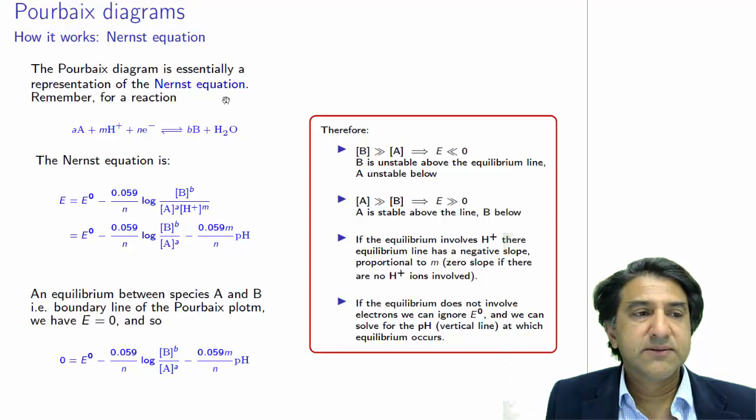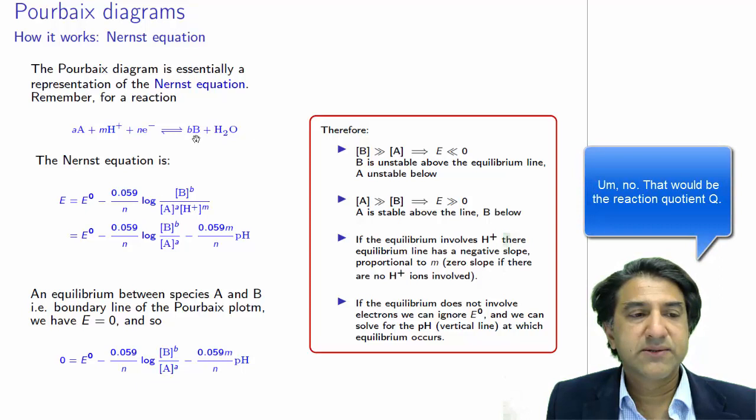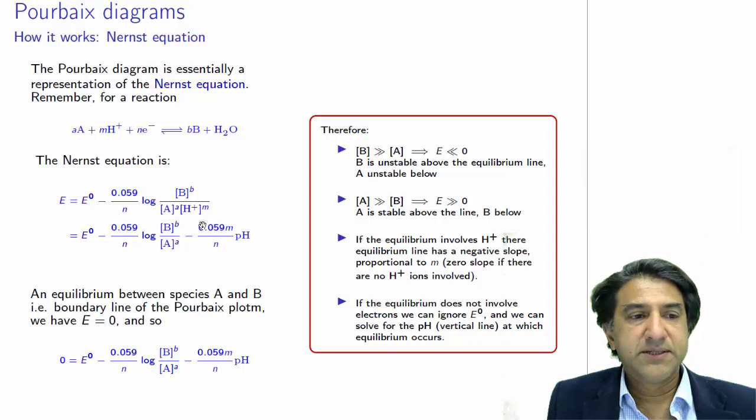Now if we write down the Nernst equation, that is E, the electrochemical potential, is E0 minus 0.0591 divided by N times log base 10 times the equilibrium constant for this reaction, which is just concentration of B to the power B divided by the concentration A to the power A divided by the concentration of H plus to the power M. And doing a bit of simplification, we can take, because the log of products is just a sum of the logs, we can take this out to be,